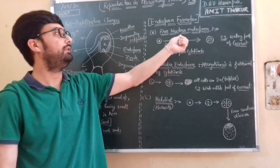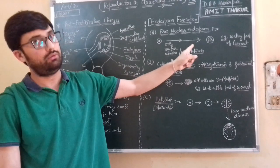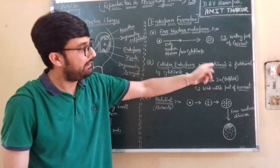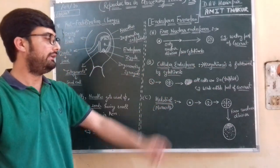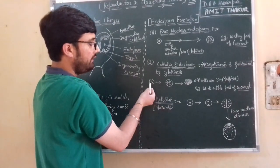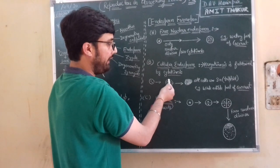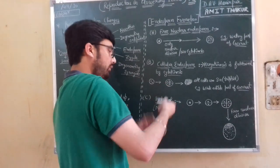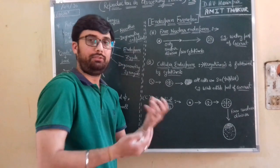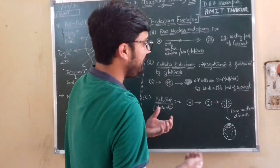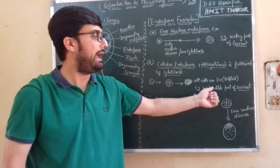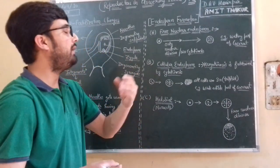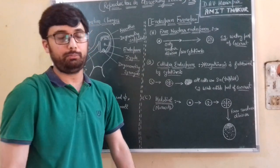Then we have cellular endosperm. In cellular endosperm, nuclear division or karyokinesis is followed by cytoplasmic division or cytokinesis. In free nuclear endosperm there is no cytokinesis — only karyokinesis — but in cellular endosperm, karyokinesis is followed by cytokinesis, forming a cluster of cells. The white edible part of coconut is cellular endosperm, while the watery part is free nuclear endosperm.